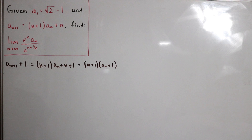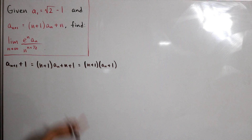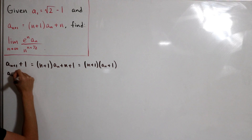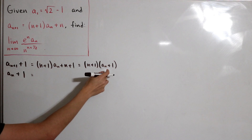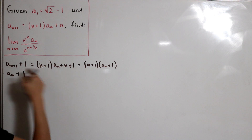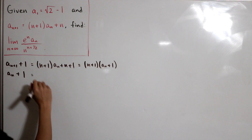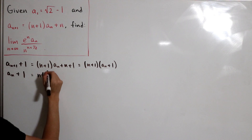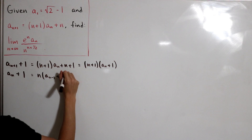Now suppose we take a step back and go back from the previous term: a sub n plus 1. So a sub n plus 1 — if we replace everything from the n+1 terms with n instead, that means we're subtracting 1 from the sequence index. So this means we have n times a sub (n-1) plus 1.